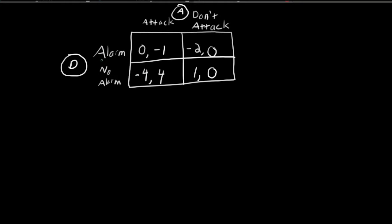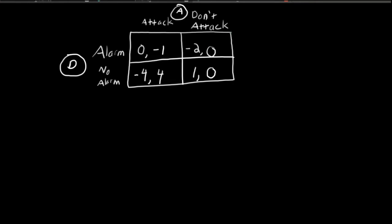That negative four means his network was attacked — maybe credit cards were stolen or personal information was stolen. Now, if the defender chooses to sound an alarm but the attacker doesn't attack, the attacker gets nothing because he's not attacking, but the defender incurs a cost of negative two. This is because false alarms are costly — for example, the defender might think there was an attack, so he'll shut down the network, and that's costly. But if there wasn't an attacker, he would lose valuable productivity time.